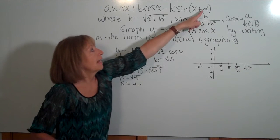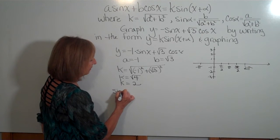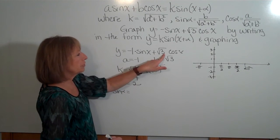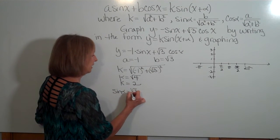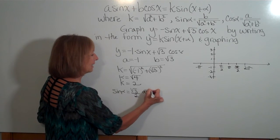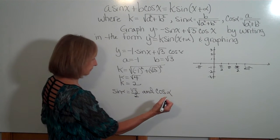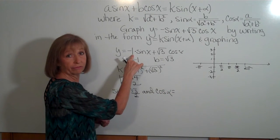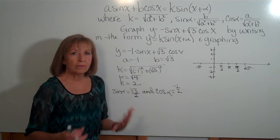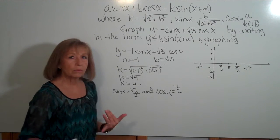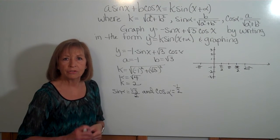Next I need to find alpha. Alpha has to be the angle such that the sine of alpha equals the coefficient in front of the cosine over k, so that's the square root of three over two. And it's also true that the cosine of alpha equals the coefficient from in front of the sine over two, so negative one-half. So I want to think about what reference angle has a cosine ratio of one-half and a sine ratio of the square root of three over two.